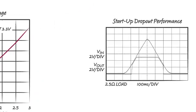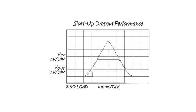Also important is good behavior going in and out of dropout, seen on the right. The LT8610 behaves like an LDO. The output voltage follows the input until the output is in regulation both during startup and shutdown.